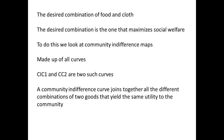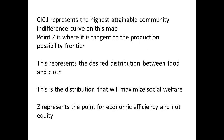To recap: we are looking for the desired combination of production of food and cloth — the combination that maximizes social welfare. We look at where the highest community indifference curve meets the line for the production possibility frontier. This is at point Z, which is at a tangent to the production possibility frontier. Z represents a point for economic efficiency and equity.